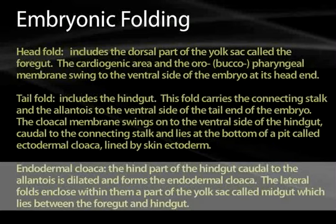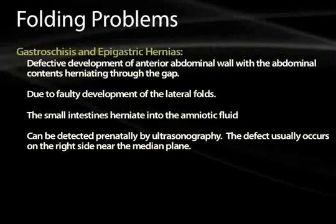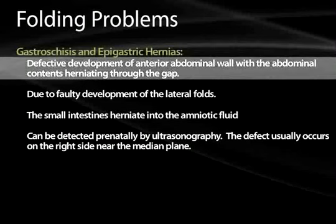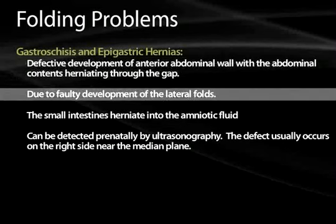We'll come back to this when we discuss the formation of the abdominal cavity. Several folding problems are critical for the USMLE Step 1. Gastroschisis and epigastric hernias are defective developments of the anterior abdominal wall, where abdominal contents herniate through gaps due to faulty development of lateral folding.